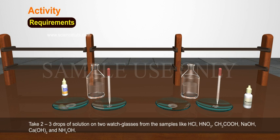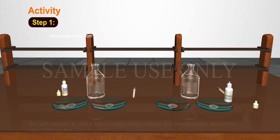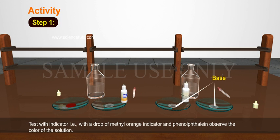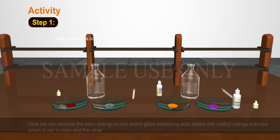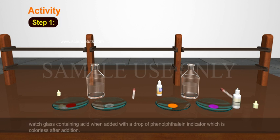Step 1: Test with indicators. Add a drop of methyl orange indicator and phenolphthalein. Observe the colour of the solution. The watch glass containing acid with methyl orange indicator turns red in colour, and the watch glass containing acid with a drop of phenolphthalein indicator remains colourless after addition.